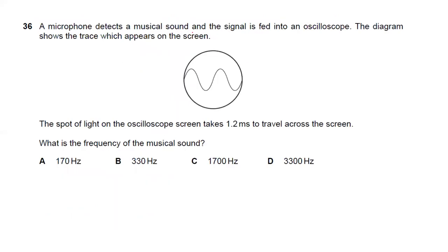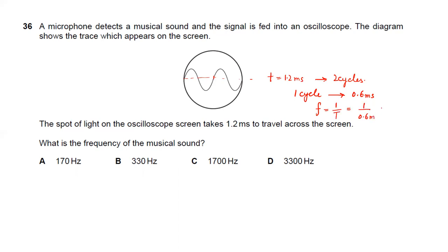Question thirty-six: a microphone detects a musical chord and the oscilloscope trace shows two complete cycles in 1.2 milliseconds. So the period T = 0.6 ms = 0.6 × 10⁻³ s. Frequency = 1/T = 1/0.0006 ≈ 1667 Hz. Answer C is the right answer.